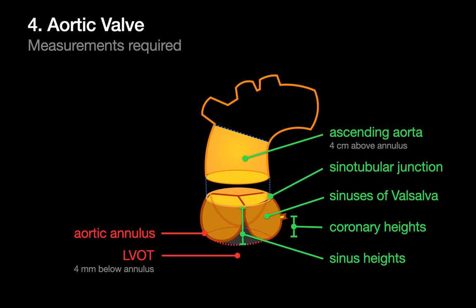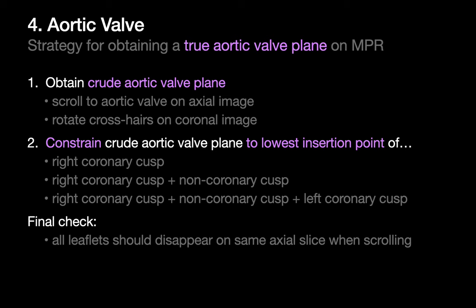In order to help folks appropriately select and size the TAVR and avoid any foreseeable complications, you'll provide measurements of the aortic annulus and LVOT during systole and a few other measurements during diastole — the systolic ones indicated in red and the diastolic ones in green. In order to provide all of these measurements accurately, you'll need to work off of a true aortic valve plane using the MPR tool on a 3D workstation. It's a two-step process: obtaining a crude aortic valve plane, which takes seconds, and fine-tuning it to a true aortic valve plane.